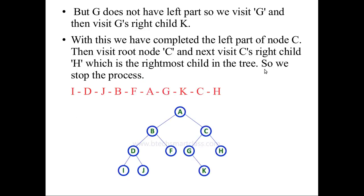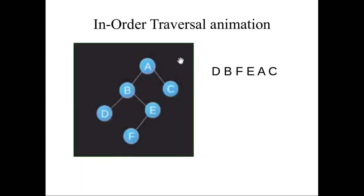So finally, the in-order traversal result for this tree is complete. To understand more clearly, an animation example is provided, with different colors for nodes that have already been visited. We will see the example with six nodes and observe the color change. Here is a binary tree with six nodes, where A is the root node.